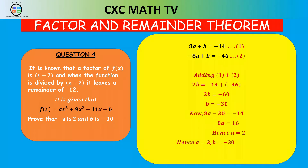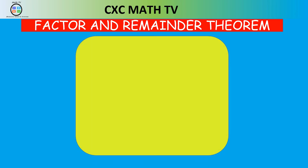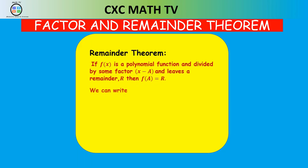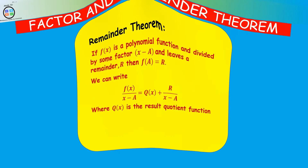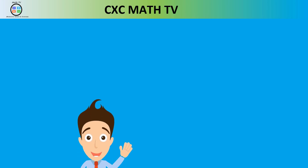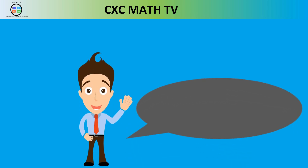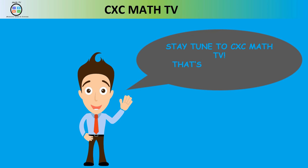Easy! So the key takeaway: remember the remainder theorem — if f(x) is a polynomial function and we divide it by (x - a) and it leaves a remainder r, then f(a) = r. We can also rewrite that as f(x) over the divisor equals some quotient plus the remainder over (x - a). It is that easy. Stay tuned to CXC Math TV. That's it for today. See you next time and have a blessed day.